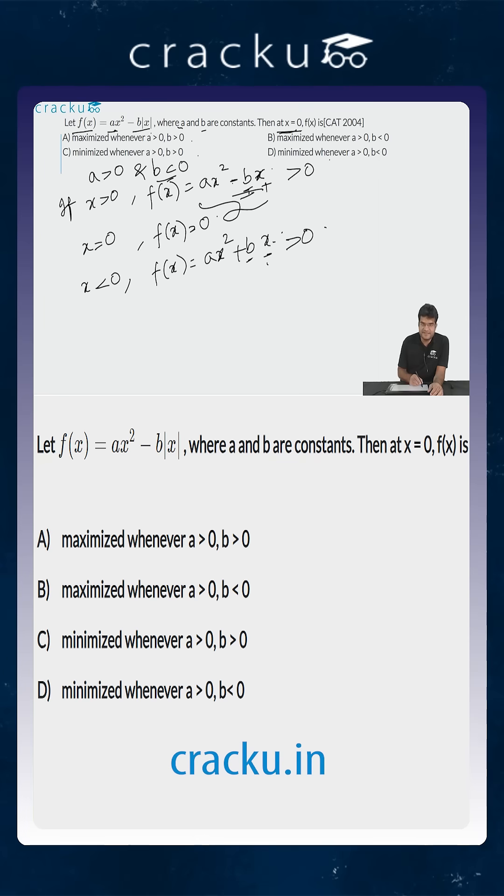So the function f(x) is greater than 0 whenever x is greater than 0, equals 0 when x equals 0, and is again greater than 0 when x is less than 0.